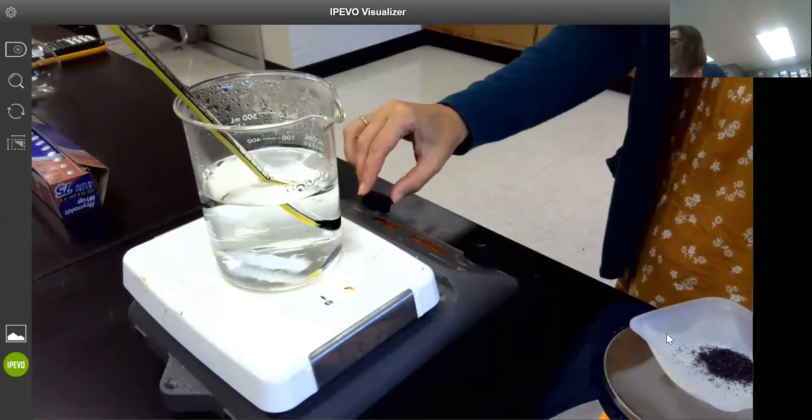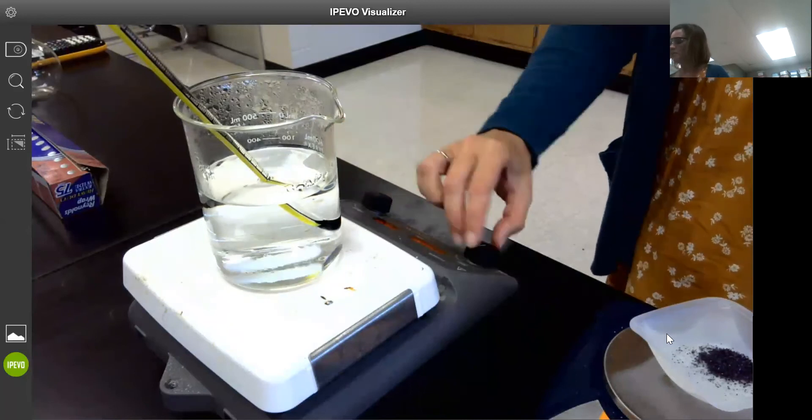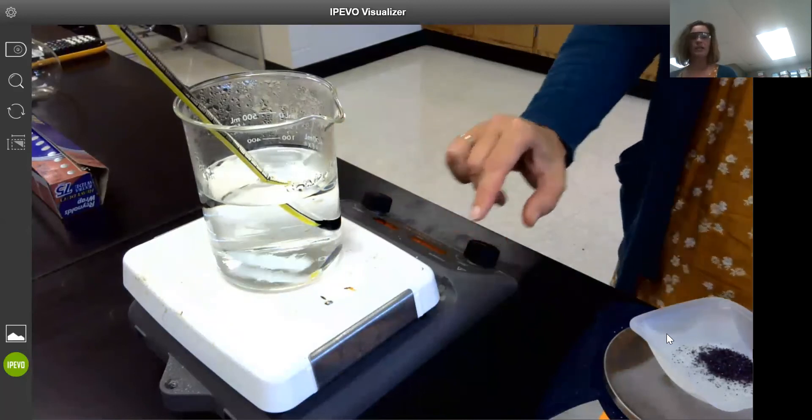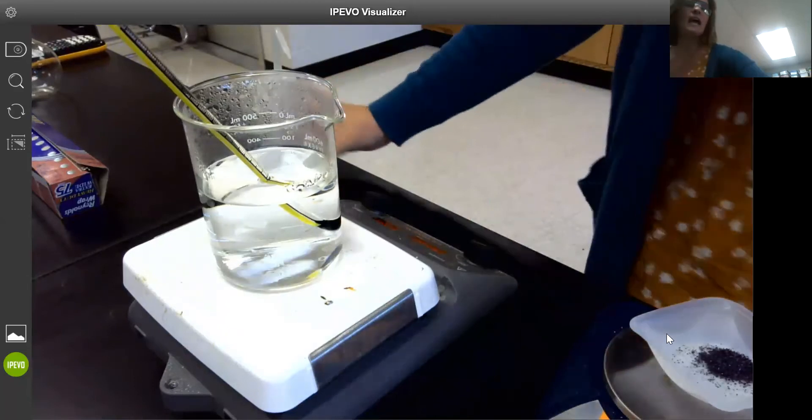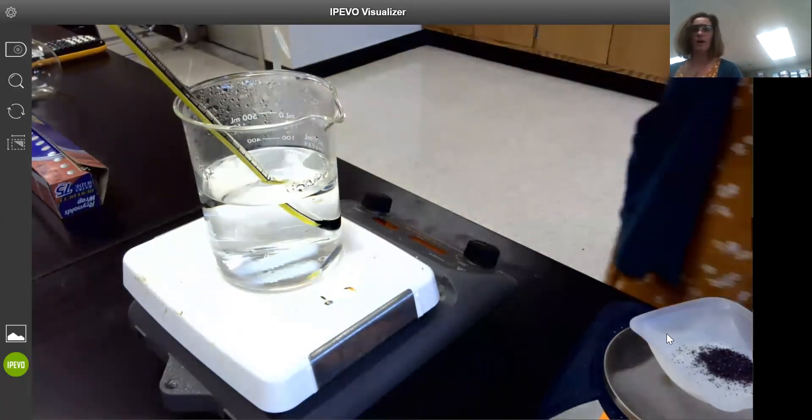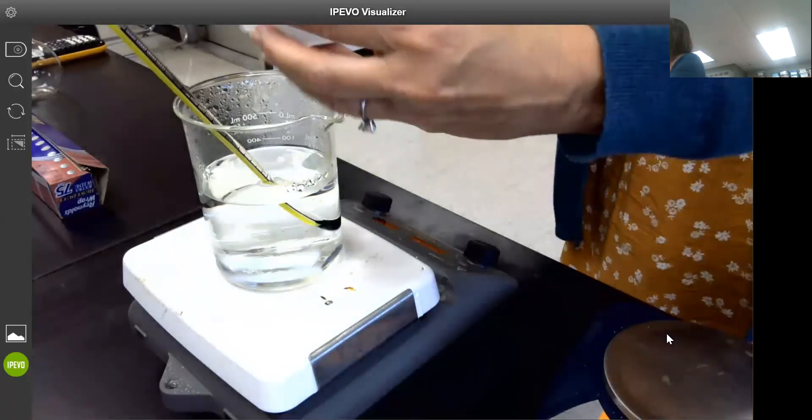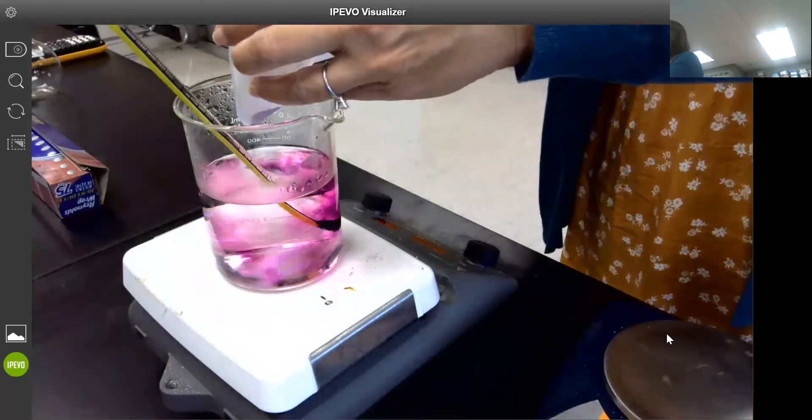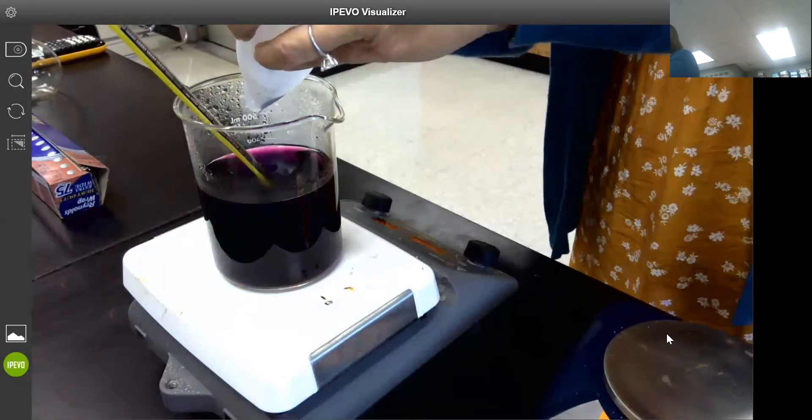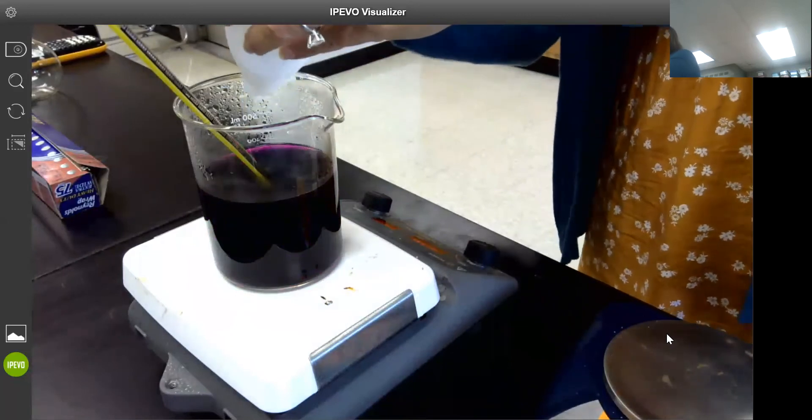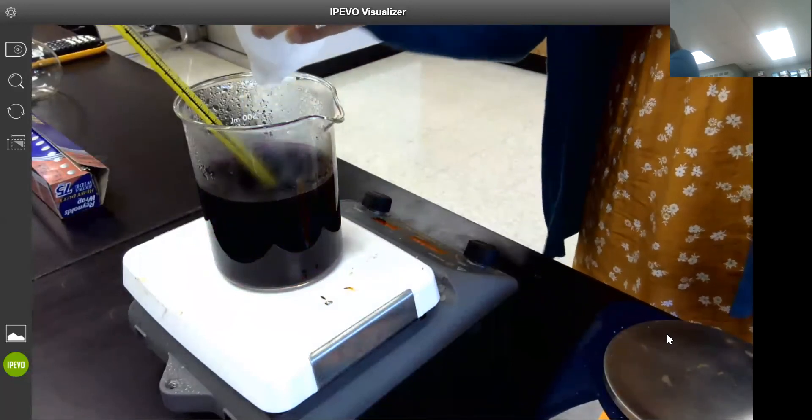I'm going to turn up the heat a little bit and turn up the stirring a little bit, and I'm going to add the KMnO4 to the beaker. You can see we get a real intense purple color when we do that. It looks like grape juice.